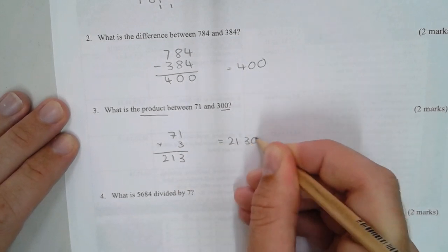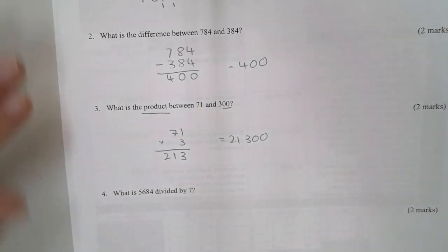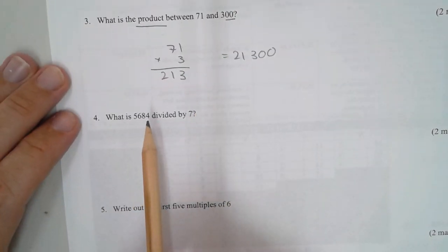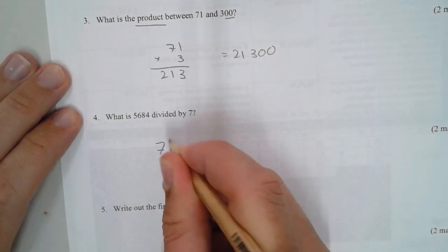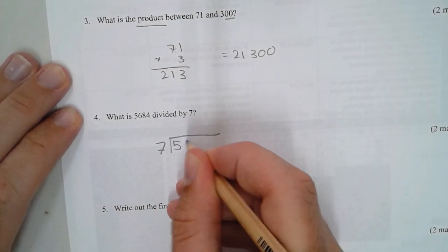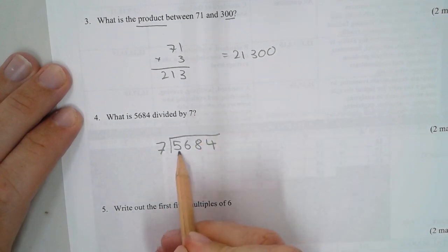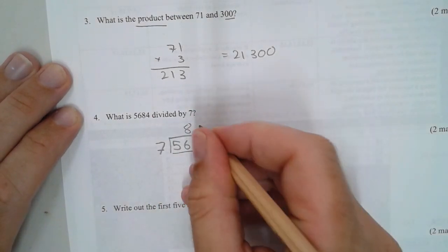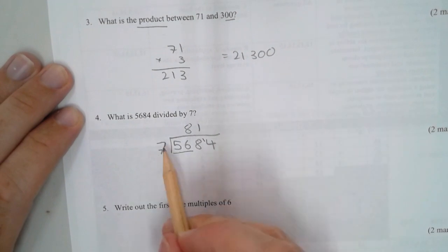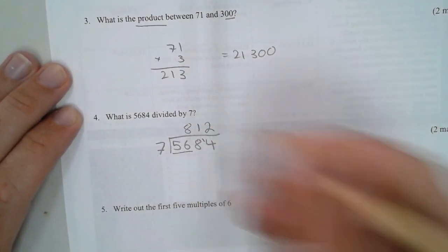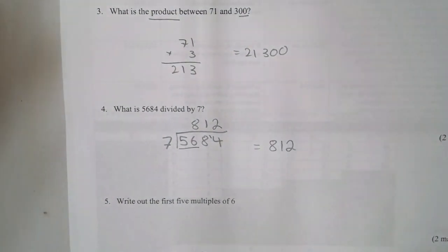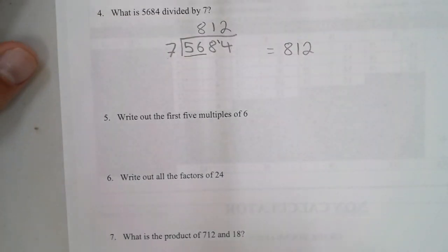I'm actually going to do 71 times 3. 1 times 3 is 3, 7 times 3 is 21 to get 213. Because we're multiplying by an extra 100, I'm adding on the extra 100, so my answer must be 21,300. Number four: what is 5684 divided by 7?